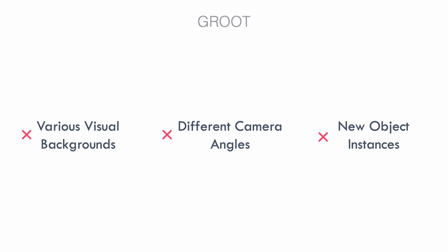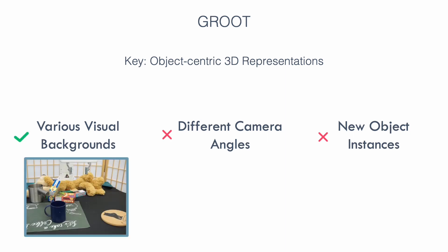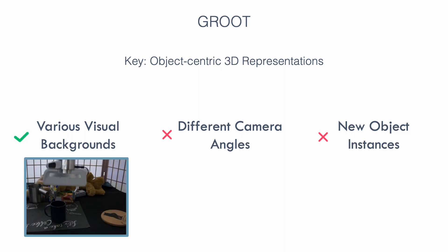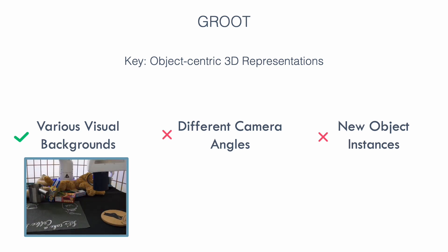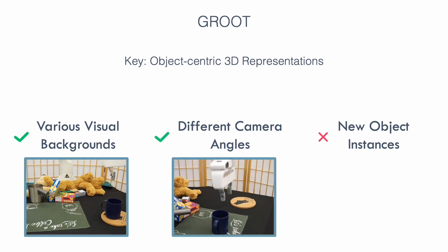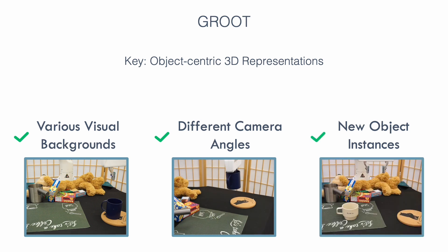In this work, we introduce Groot, which designs object-centric 3D representations that can learn policies that generalize to diverse backgrounds even with varying lighting conditions, different camera angles when the perspective shifts a lot, or new objects that vary in textures and shapes.